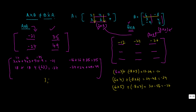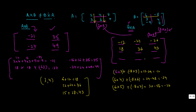For the second row of B×A, using row [3, 4]: 3×2 + 4×3 = 6 + 12 = 18; 3×4 + 4×6 = 12 + 24 = 36; 3×5 + 4×7 = 15 + 28 = 43. So the second row is [18, 36, 43].